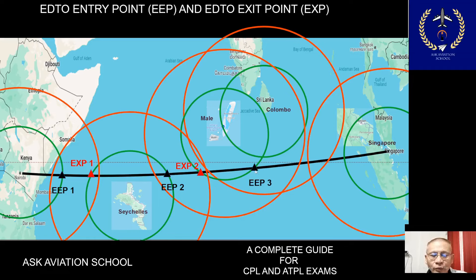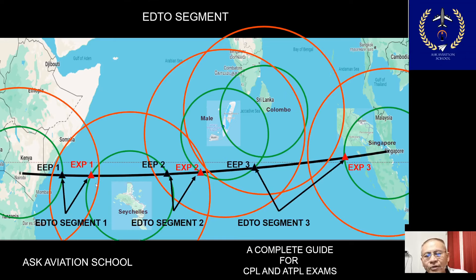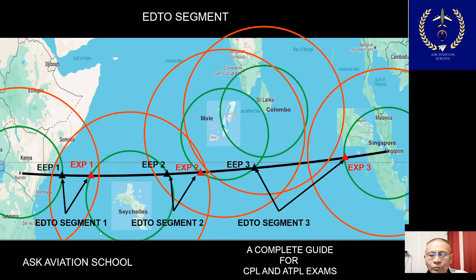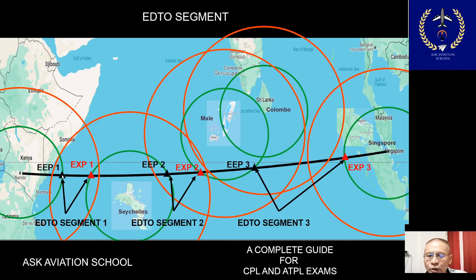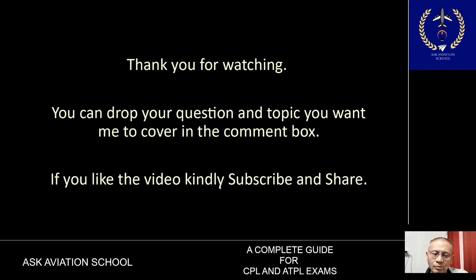When the aircraft crosses the green circle again it enters EDTO flight for the third time — EDTO Entry Point 3 (EEP3) — and the last being EDTO Exit Point 3 (EXP3). The segment between EEP1 and EXP1 is EDTO Segment 1; between EEP2 and EXP2 is EDTO Segment 2; and EEP3 to EXP3 is EDTO Segment 3. However, some airlines may consider the entire flight from the first EEP to the last EXP as a single EDTO segment — this depends on the airline.